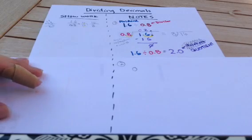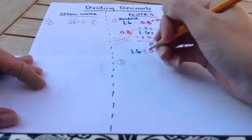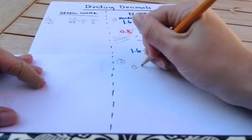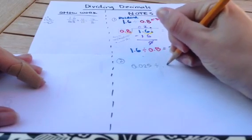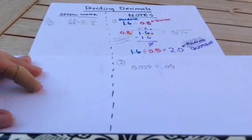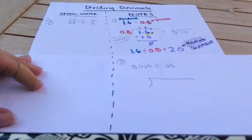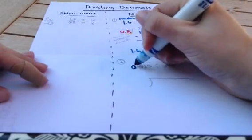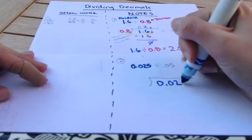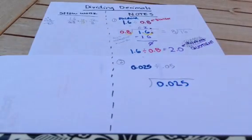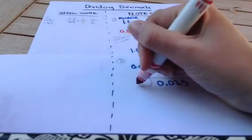Now on to our next problem. If I want to find what 0.025 divided by 0.05 is, it's got a lot of zeros in it. And if I try to make that into my long division, I know that my dividend of 0.025 goes on the inside, and my divisor, 0.05, goes on the outside.